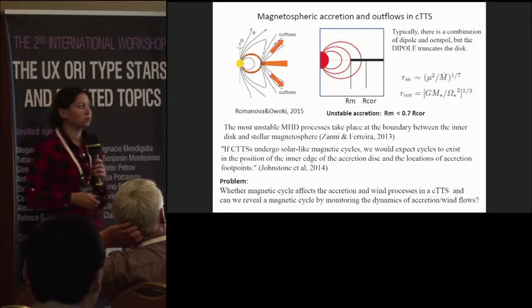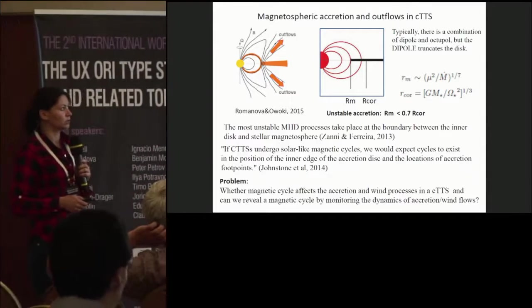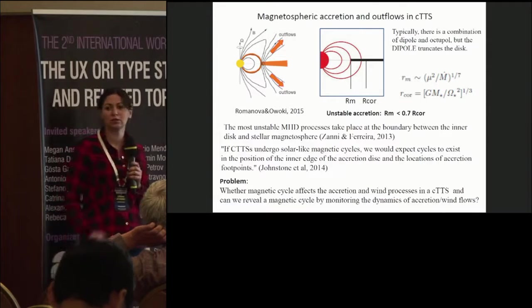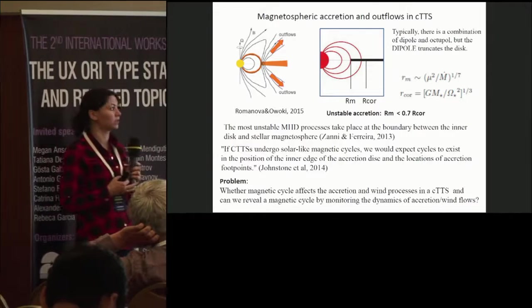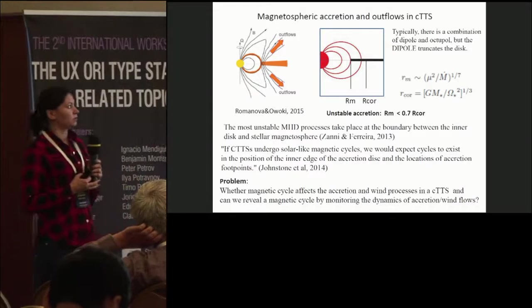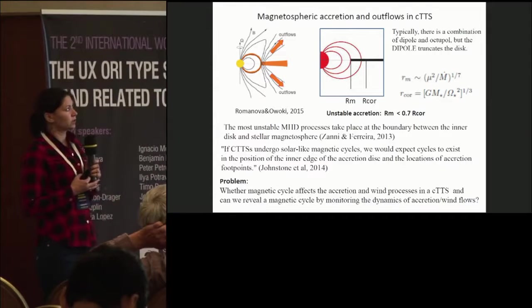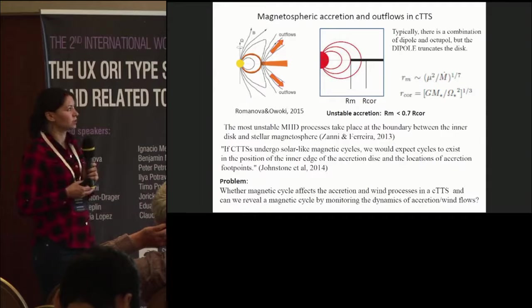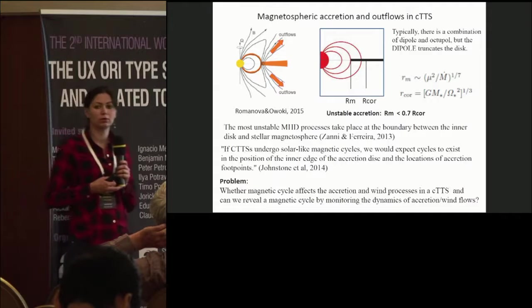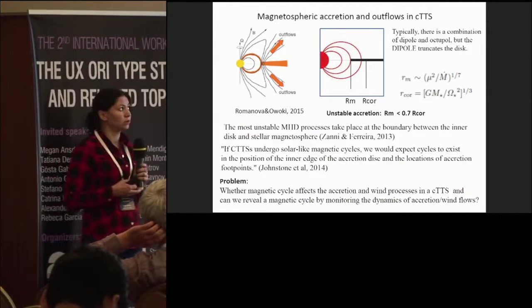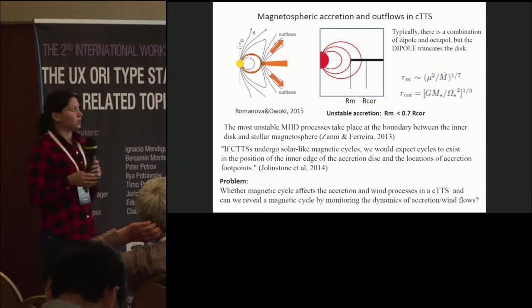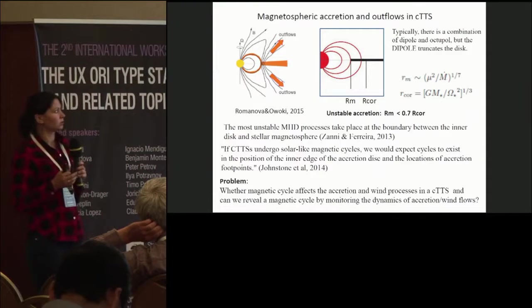Numerical simulation shows that the most unstable MHD processes take place at the boundary between the inner disk and stellar magnetosphere. Magnetic field in the stars can be quite complicated. Typically, it is a combination of a dipole and octopole, but the dipole truncates the disk while the octopole just defines hot spots on the stellar surface.